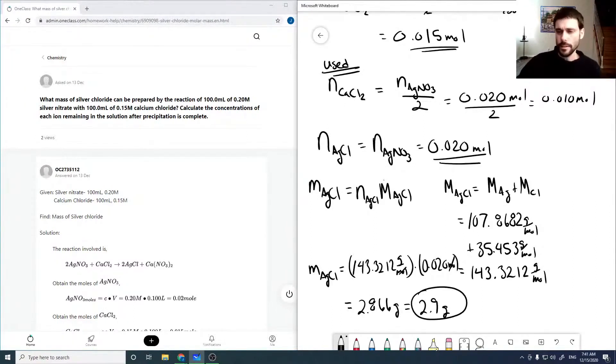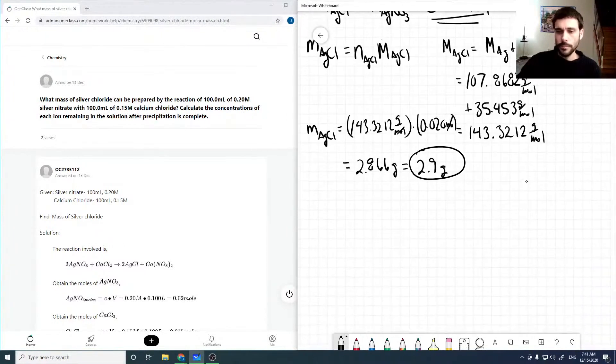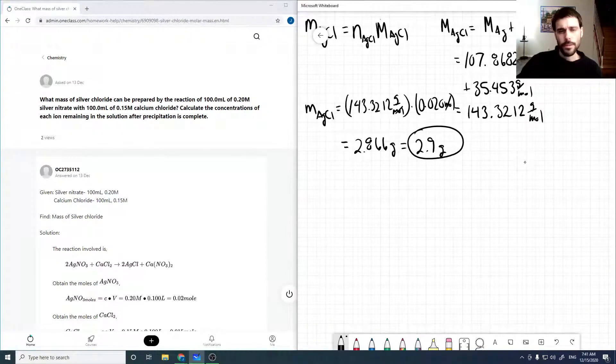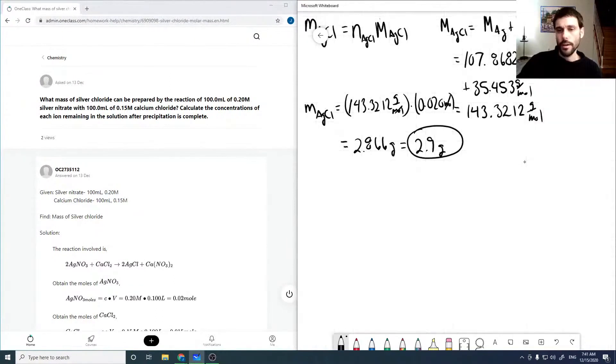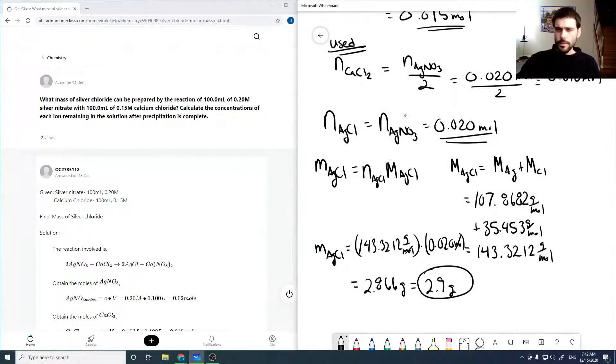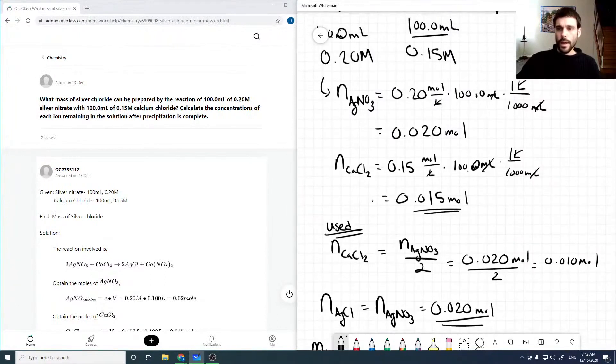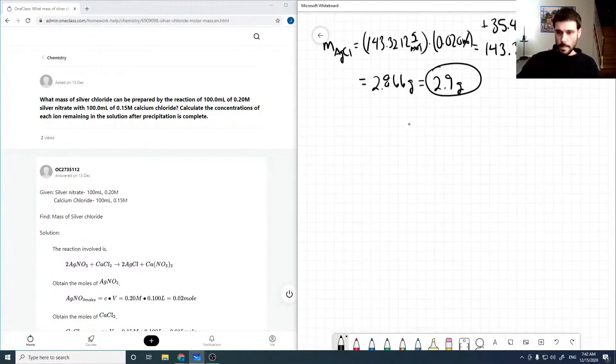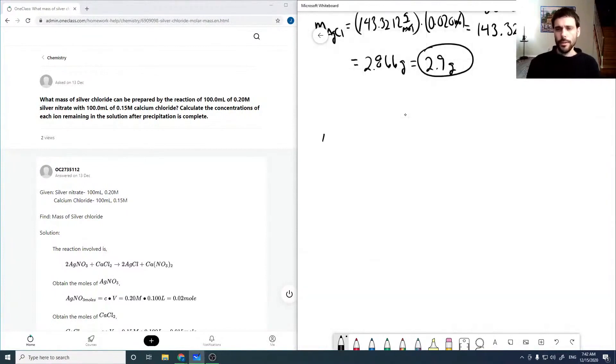So that's the mass of silver chloride prepared. And it also asks what the concentrations of each ion remaining in solution after precipitation is complete. So what ions do we have in solution? We have, just looking through now, so AgNO3 is going to give us Ag plus, plus NO3 minus. And so we had 0.020 moles of this guy.